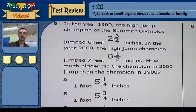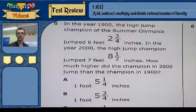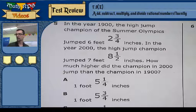Hey, on to side two, number five. In the year 1900, the high jump champion of the Summer Olympics jumped 6 feet 2 and 3 quarters inches. In the year 2000, the high jump champion jumped 7 feet 8 and 1 half inches. How much higher did the champion in 2000 jump than the champion in 1900?